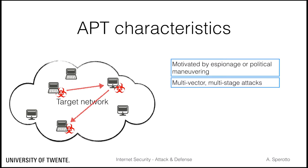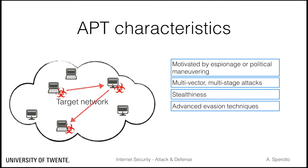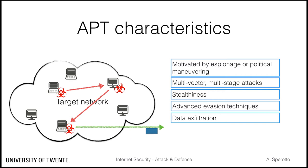APTs make use of multiple attack vectors and tools. Also, APTs do not stop at the initial compromise, but they are multi-stage attacks. APTs have a high degree of stealthiness and specifically aim at remaining below the radar. A way to remain below the radar is by employing advanced evasion techniques to bypass security appliances. Once an APT has gathered valuable information, data exfiltration will take place.